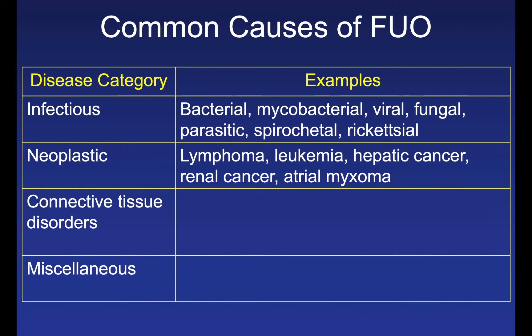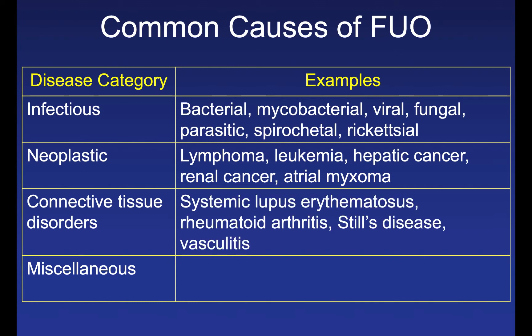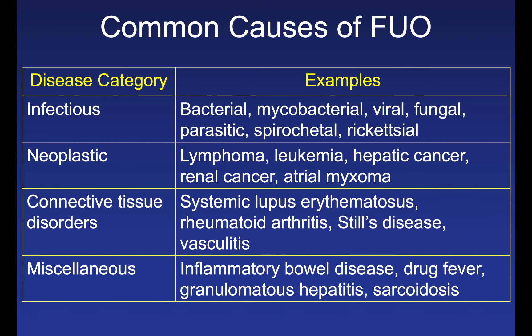For neoplastic causes, lymphoma is one of the most classic causes of FUO — consider it especially when patients present with B symptoms, lymphadenopathy, or hepatosplenomegaly. Leukemia, hepatic cancer, renal cell carcinoma, and atrial myxoma are also neoplastic causes. Connective tissue disorders include lupus, rheumatoid arthritis, Still's disease, and small, medium, and large vessel vasculitides. Miscellaneous causes include inflammatory bowel disease, drug fever, granulomatous hepatitis, and sarcoidosis, which can involve almost every organ system and present as FUO.